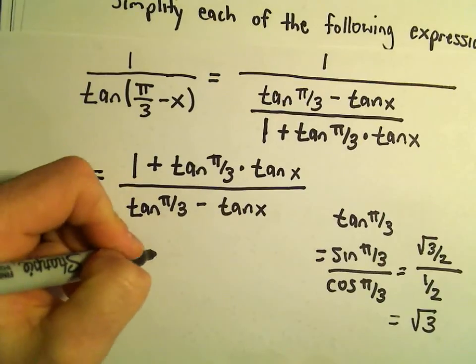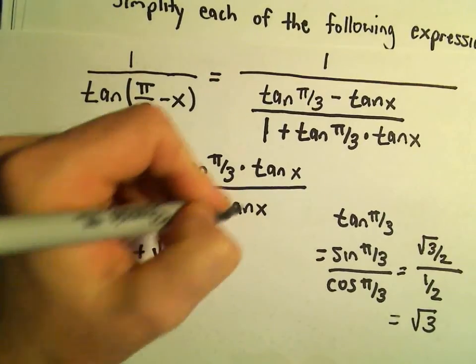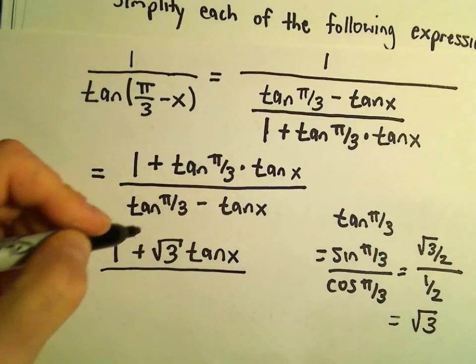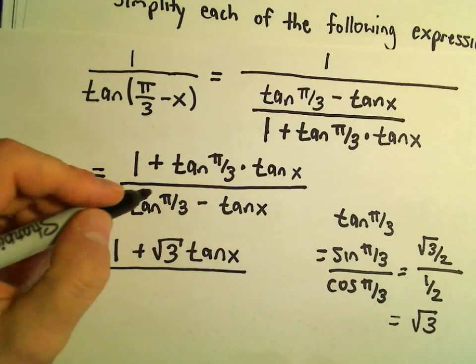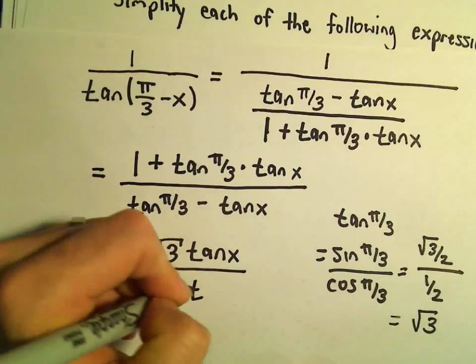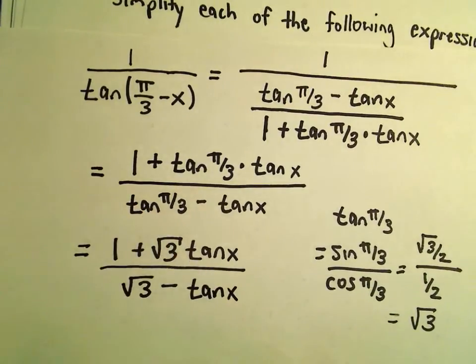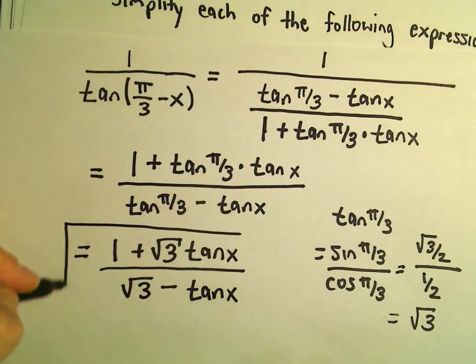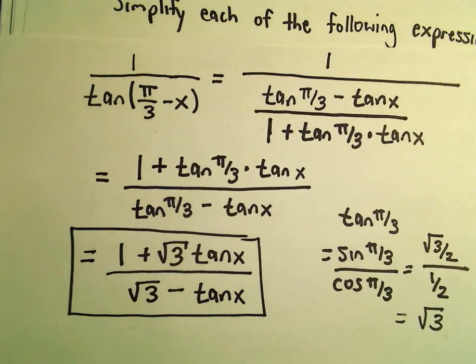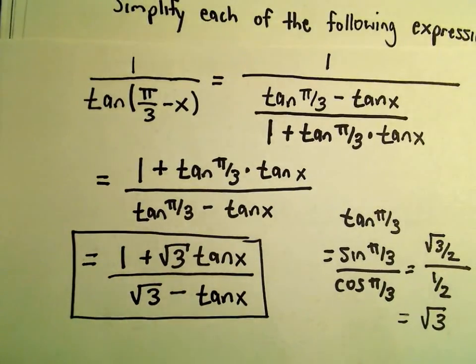We get 1 plus √3 times tan(x) in the numerator, and √3 minus tan(x) in the denominator. There are other things you could do, but I'll leave it there. We've come up with a new expression for that original expression.